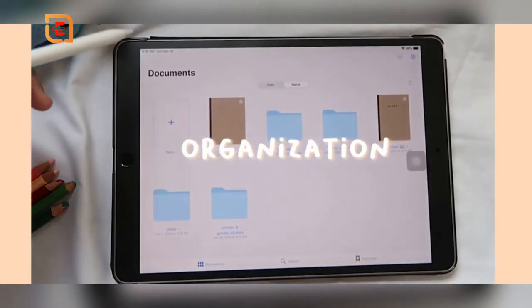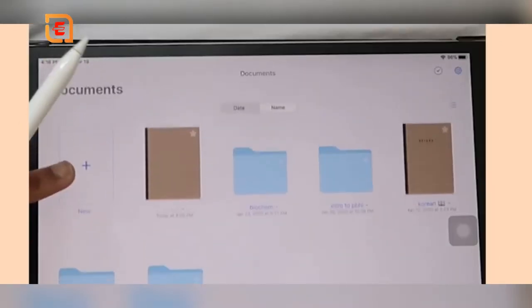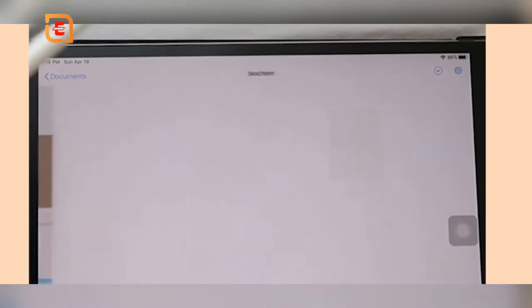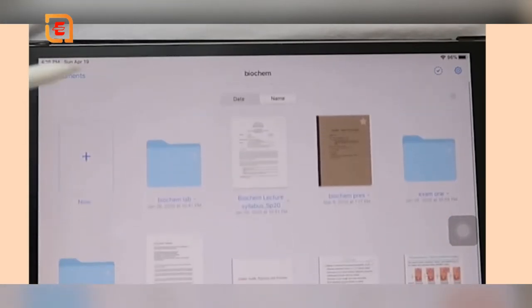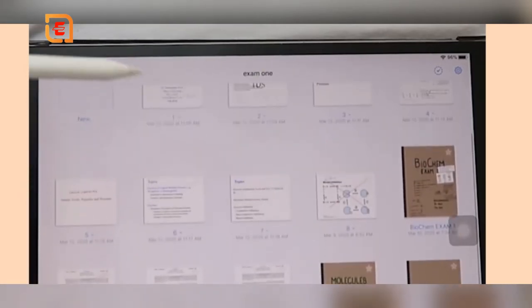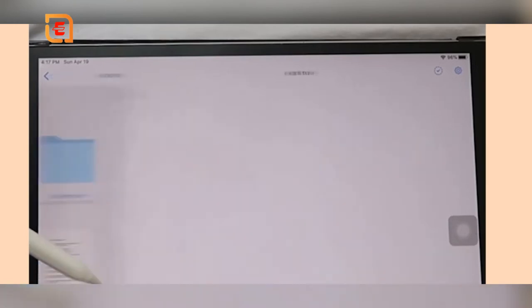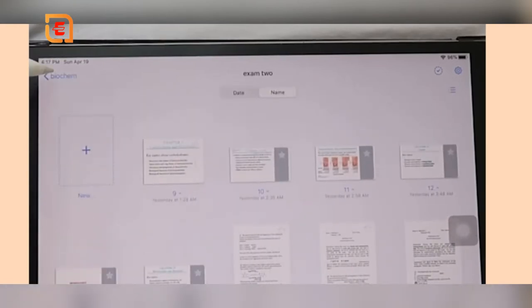For organization within the app, I have a folder for each class and then within the class folder, I have subfolders for further separation of documents. For example, within my biochemistry folder, I have a section for my biochemistry lab, the exam 1 material, and the exam 2 material for the class.